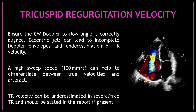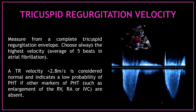Tricuspid regurgitation velocity can be underestimated in severe or free-flow tricuspid regurgitation and should be stated in the report if present. Always measure from a complete tricuspid regurgitation envelope — choose always the highest velocity, or the average of five beats in atrial fibrillation. A tricuspid regurgitation velocity less than 2.8 m/s is considered normal and indicates a low probability of pulmonary hypertension if other markers of pulmonary hypertension are absent.